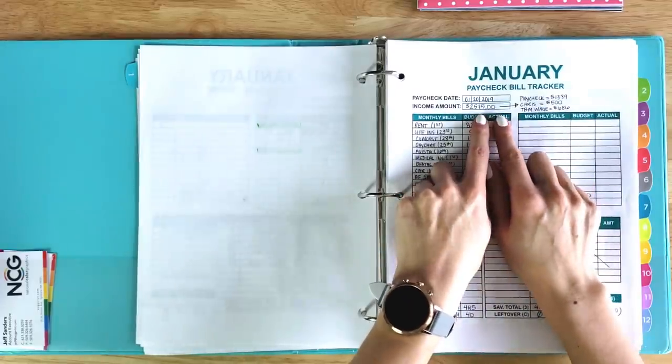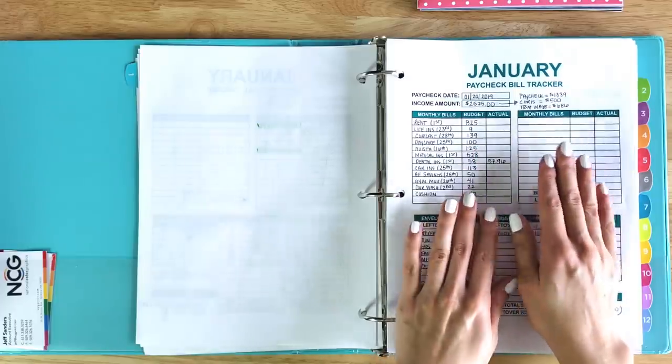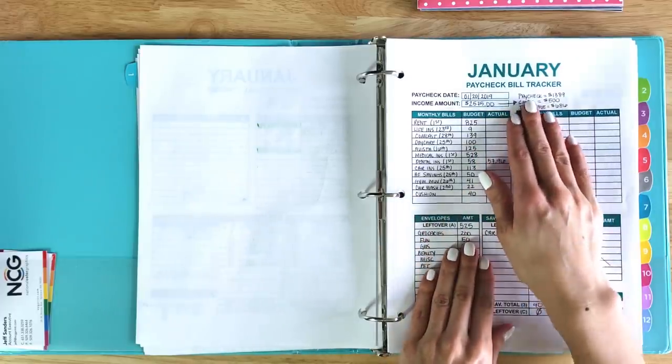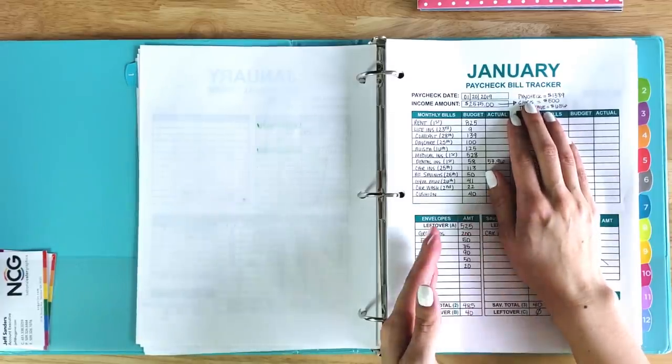I've broken down my income to be more transparent. On the last paycheck of the month, I have a couple of different income sources. I have a paycheck from my day job or my 8 to 5 job.